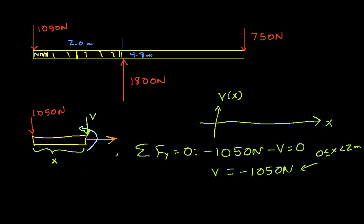So if I plot this then, between 0 and 2 meters, my plot is going to look something like this. It has a value of minus 1050 newtons. And between 0 and 2 meters, that's what I have.